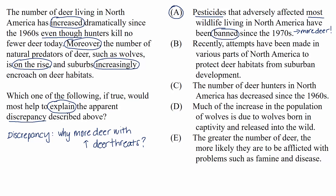Let's look at the wrong choices. Choice B: recently, attempts have been made in various parts of North America to protect deer habitats from suburban development. This doesn't help us. First of all, we don't know how recently these protective attempts have been made, and we also don't know how effective those attempts were. We don't know which parts of North America are counted when it says 'various parts,' meaning we don't know if those are significant parts. We'd have to add way too many assumptions to justify this choice, and that's never a good thing when evaluating a choice on test day.